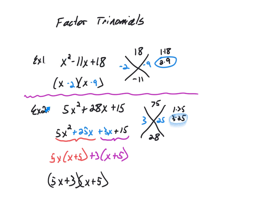The second example for factoring trinomials is when a is greater than 1 — in this case a equals 5. We still use the x-puzzle but now multiply a times c, which is 5 times 15 equals 75. We look for factors of 75 that equal 28. The factors 3 and 25 work because 3 plus 25 equals 28 when both are positive. So I bring down 5x squared, then write 28x as plus 25x plus 3x, and bring down the constant plus 15.